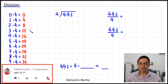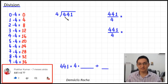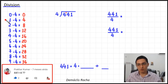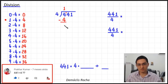Having the multiplication table of the divisor available like this makes things very easy. We start by taking a look at the first digit of our dividend — in this case it is four. We ask: how many times does four go into four without going over? Only once. So I write the number one here, and one times four equals four — I write it here, and then I subtract. Four minus four equals zero.